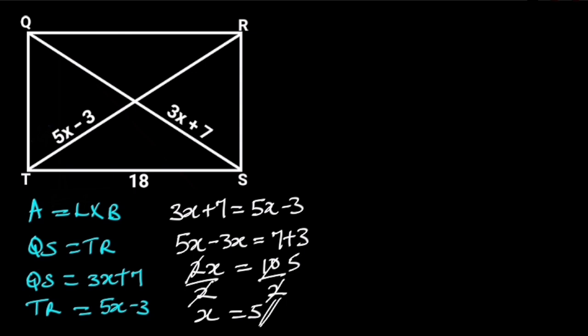Now we know the value of x. We can go ahead and substitute x with 5 in QS to get the diagonal of the rectangle. That is, 3 times 5 plus 7, which is equal to 15 plus 7, which is 22.